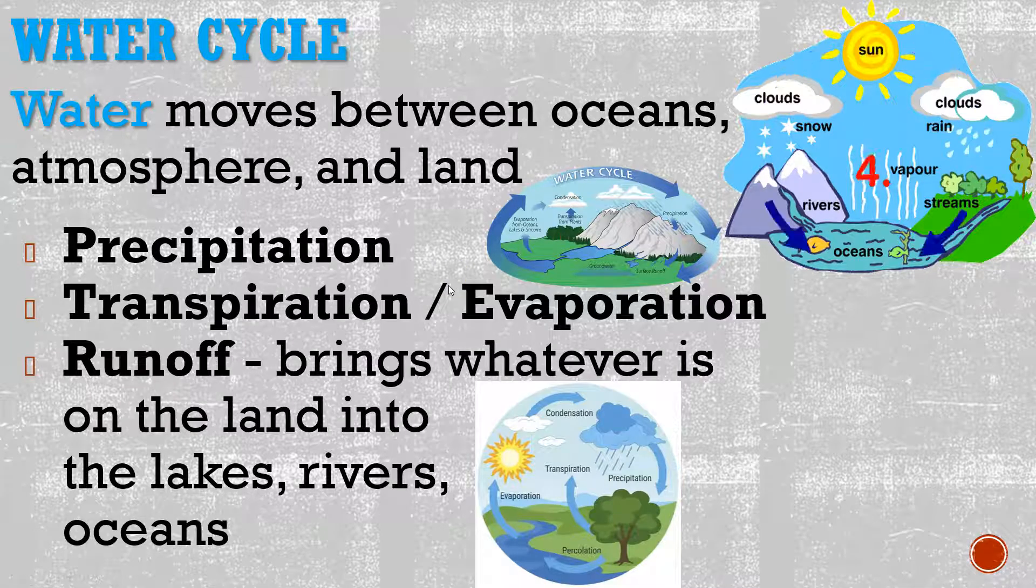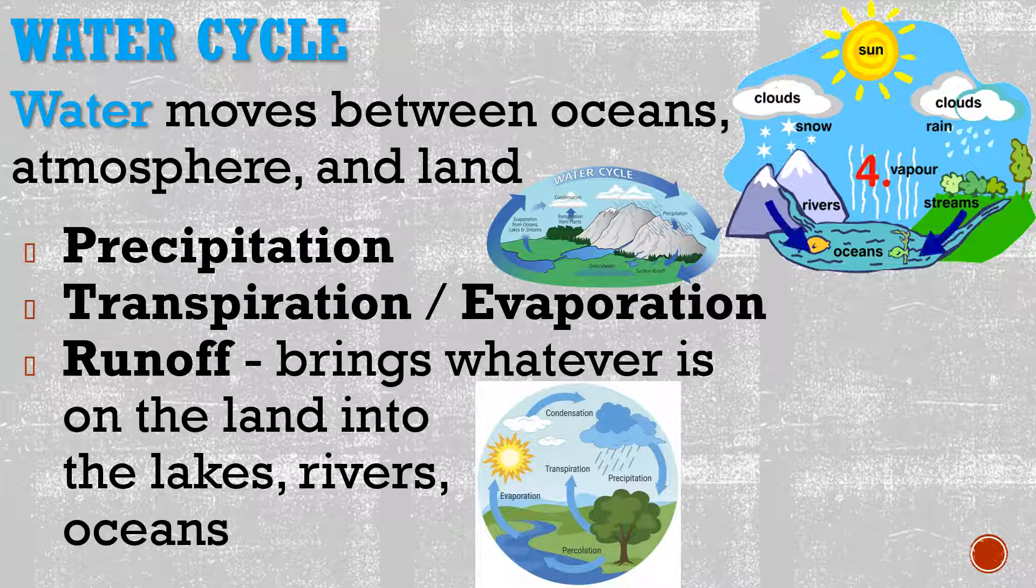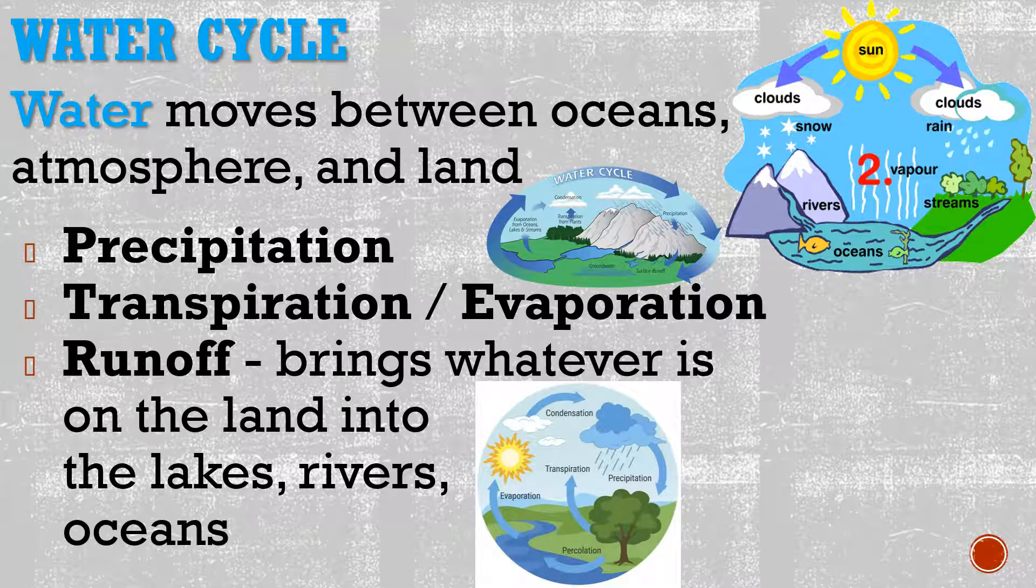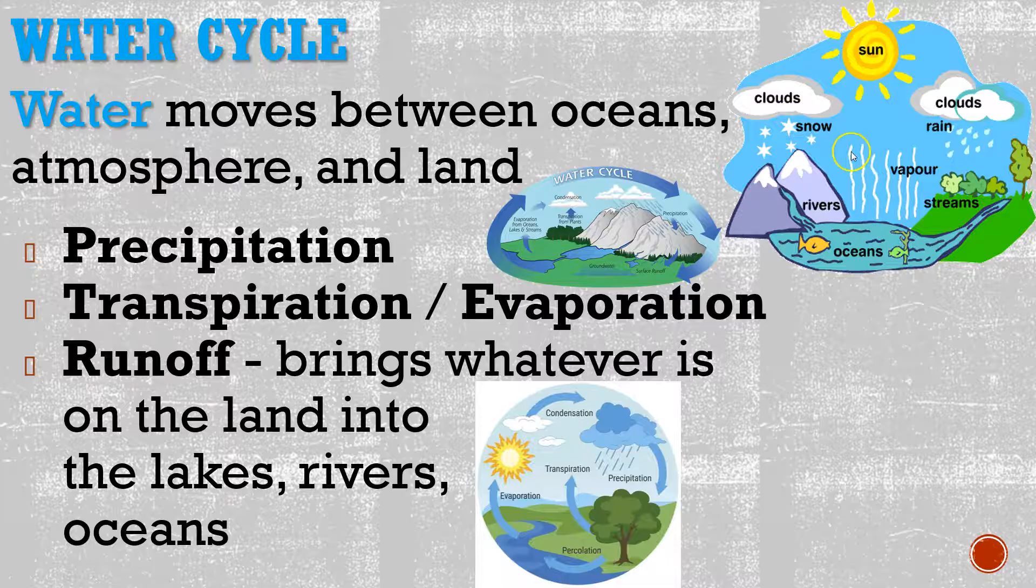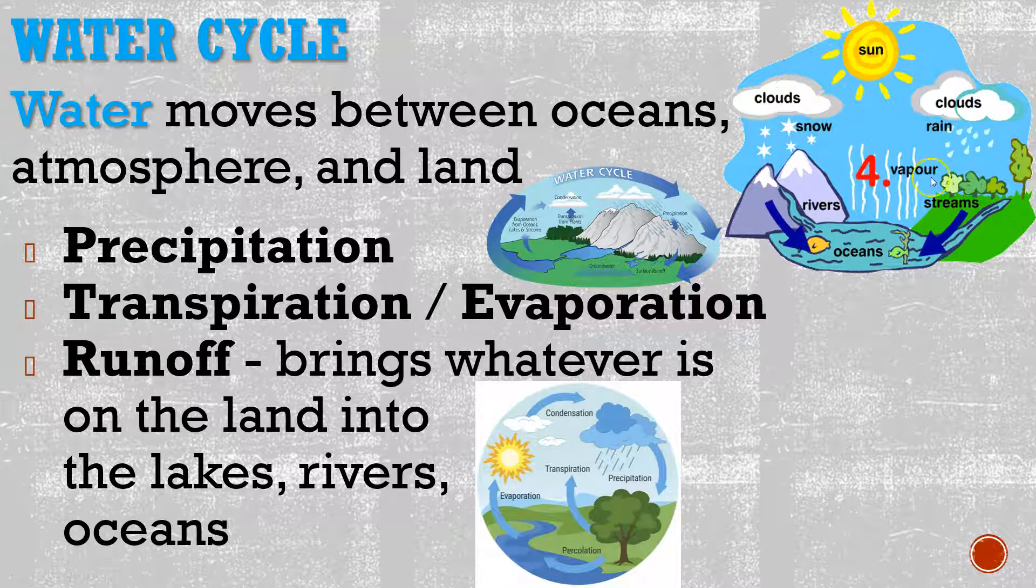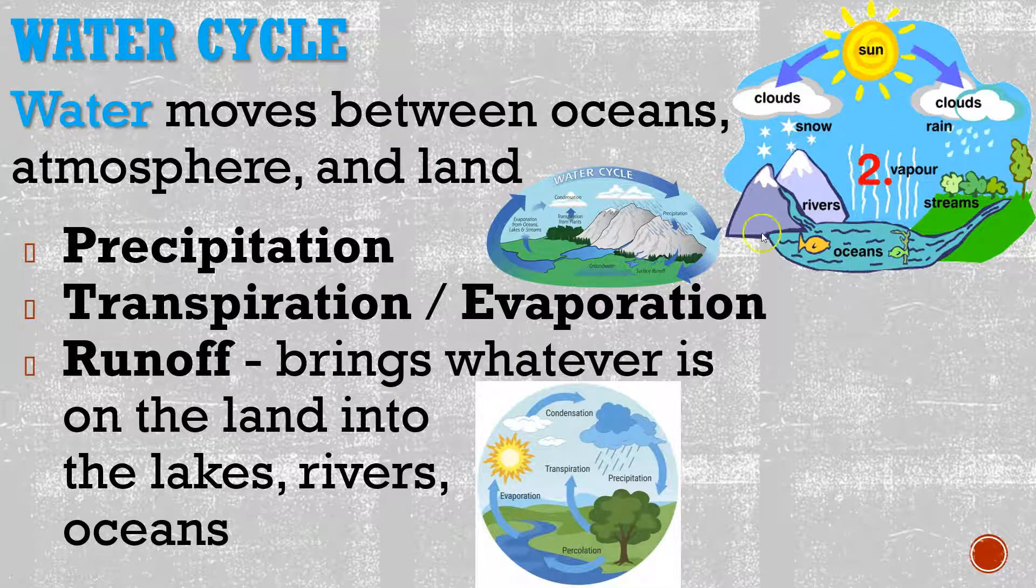Precipitation is going to be any one of those things: rain, hail, sleet, snow, any one of those. Transpiration or evaporation is going to be the water actually rejoining the water in the sky. Trees are going to be giving off some of that water through transpiration, and of course evaporation from the sun.